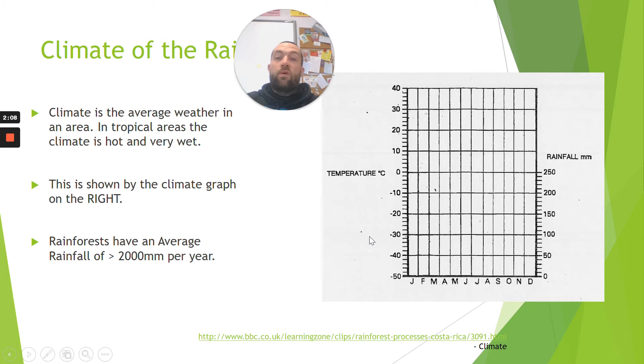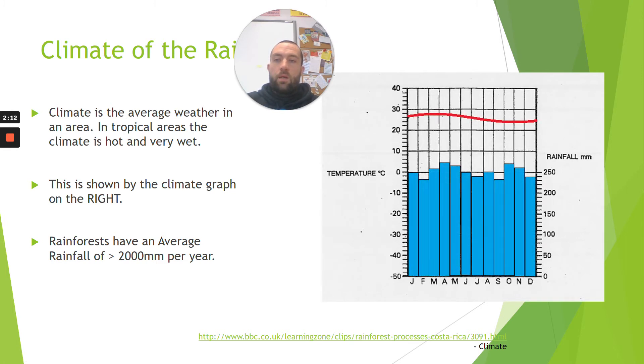All right, now temperature is on the left hand side of the climate graph. And we notice that the zero starts halfway up. That's because in some areas of the world we get negative temperatures, like minus two degrees, Scotland being an example.